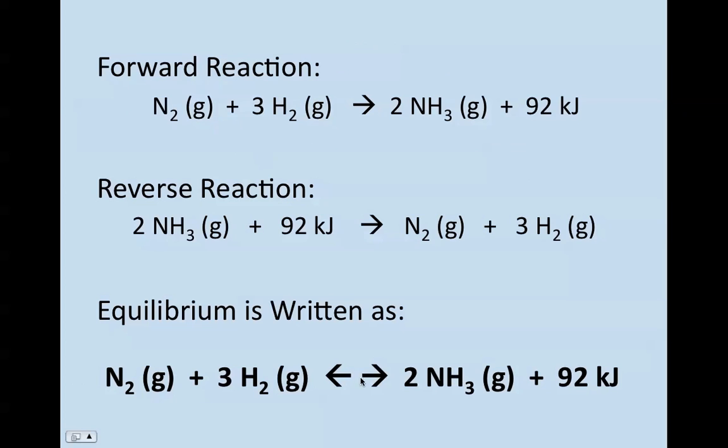So we can look at the production of ammonia gas by looking at the forward reaction of nitrogen plus hydrogen gas, giving us ammonia and being exothermic.